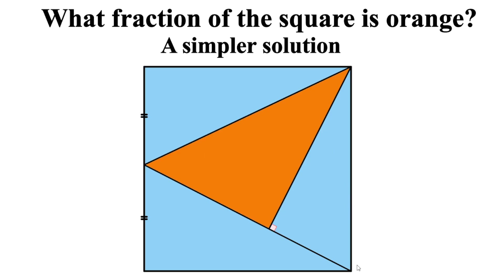In my last video, we wanted to find what fraction of the square is orange. As you can see, we have a square with some triangles in it, and specifically one orange triangle. I used a combination of the Pythagorean theorem and similar triangles to find the solution. The solution was 3 tenths, but in the last few days I discovered another way of finding the solution without using the Pythagorean theorem — just using similar triangles themselves.